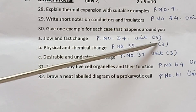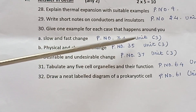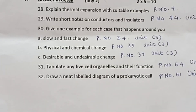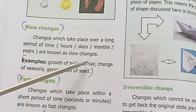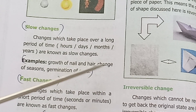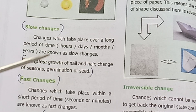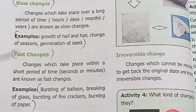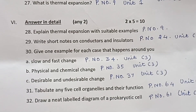Question 13: Give one example for each — slow and fast changes around you. Page number 34, Unit 3. Slow change examples: growth of nails and hair, change of seasons, germination of a seed. Fast change examples: bursting of a balloon, breaking of glass, bursting of firecrackers, burning of paper.